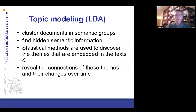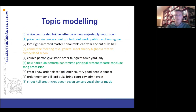I'd like to introduce topic modeling. Topic modeling clusters documents in semantic groups. The idea is to find hidden semantic information by using statistical methods to discover the themes embodied in the text and reveal the connection of these themes and their changes over time. I wanted to analyze nine topics, and you can see the words related to each cluster. Topic number five contains words: harlequin, perform, pantomime, principle, present, theater, conclude, song and procession — all related to the Harlequin Freemason performance. The other topics also make sense and are relevant in the study of Freemasonry.